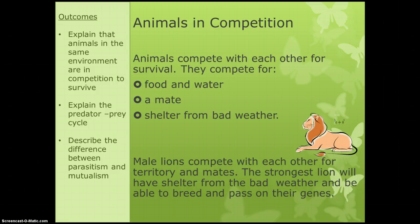An example is lions competing with each other for territory and mates. The strongest lion would have shelter from bad weather, be able to breed, and therefore get to pass on their genes.